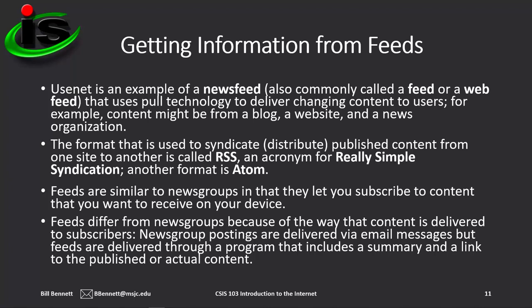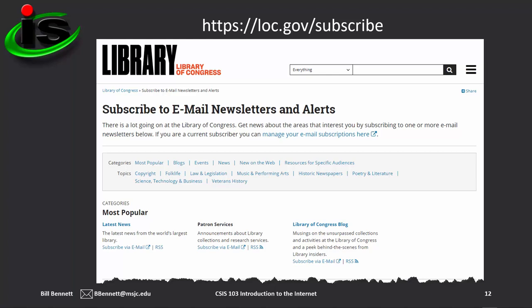To subscribe to a feed you are interested in, you can use a feed directory to find a source, though a more common method is to use the tools provided on the website where the feed resides. Websites that include feeds will display a small orange RSS icon. You can click to subscribe or use a provided sign-up box to enter your email address. Sometimes the link is a text link with the letters RSS indicating the file format. The image on your screen shows a page from the Library of Congress's website at loc.gov/subscribe, where you can subscribe to feeds based on categories or topics. You can view feed content without subscribing, but you will not receive updated content automatically without a subscription.